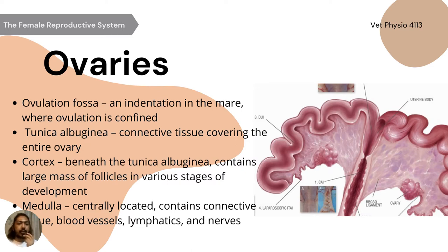The tunica albuginea is the connective tissue covering the entire ovary, while the cortex is beneath the tunica albuginea and contains a large mass of follicles in various stages of development. The medulla is centrally located and contains connective tissue, blood vessels, lymphatics, and nerves.